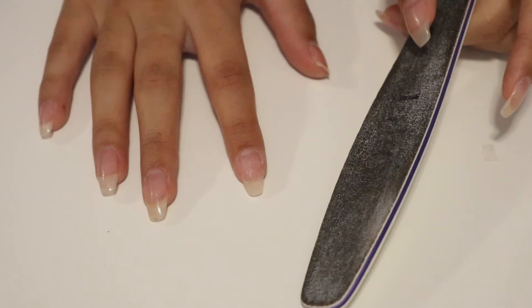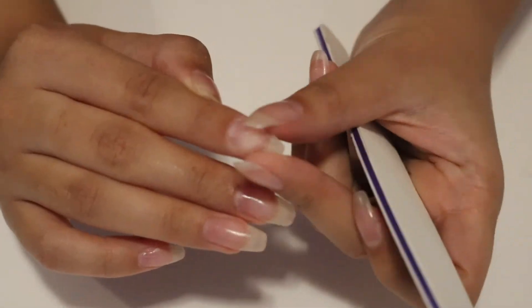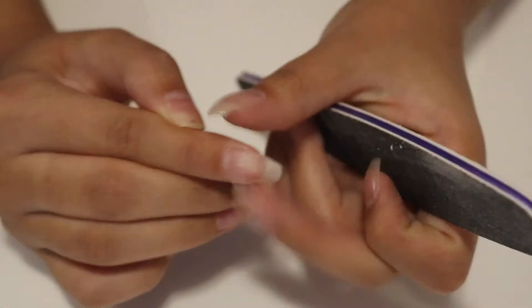So after adding a couple of layers of the tea bag, I am going to start filing. You do want to be really careful with the filing and be really gentle because the fibers do come off really easily.